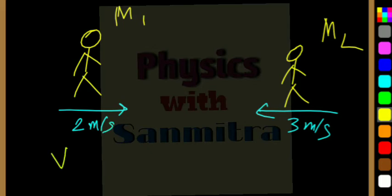Now what is velocity of M2 with respect to M1? That is very simple. M2 is walking towards M1, the speed that is 3 plus 2, or rather 3 minus of minus 2, that is 5 meter per second.